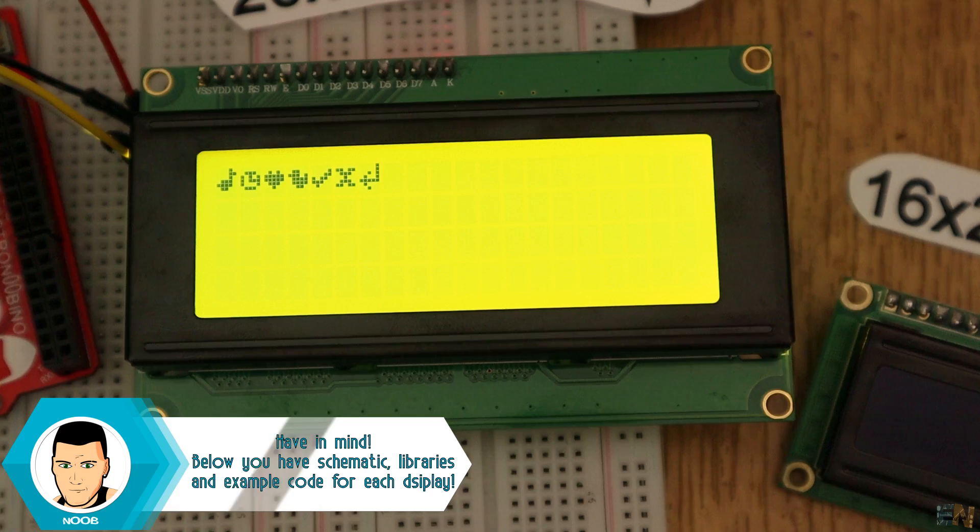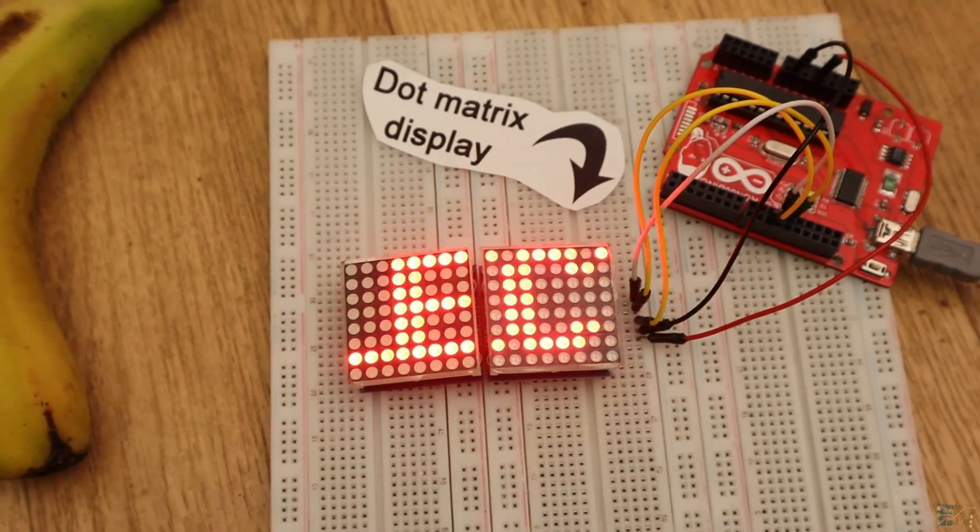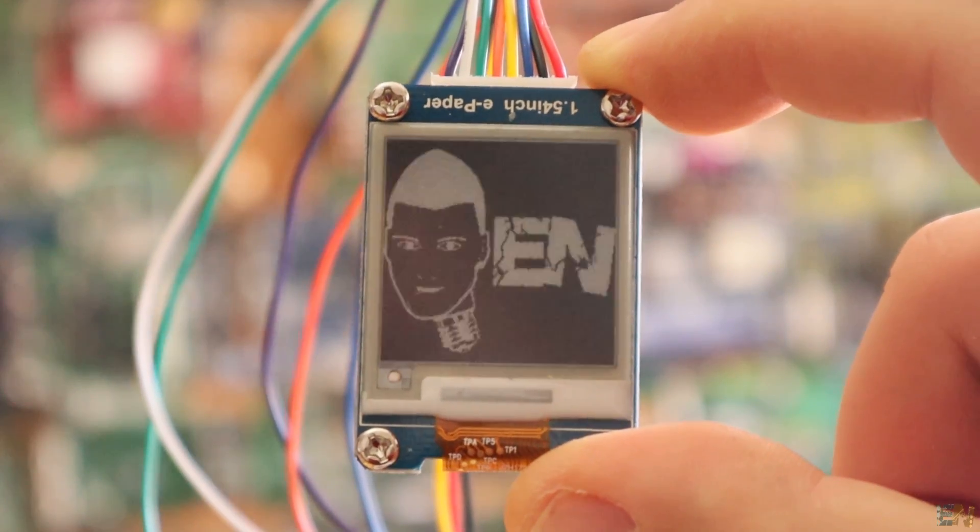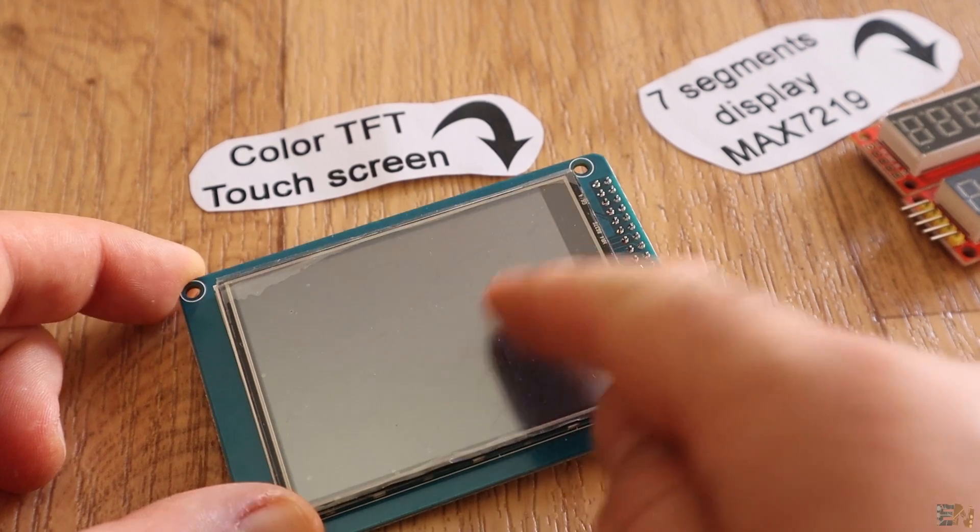We have displays for text, for numbers, dot matrices and e-papers. Some of these also have a touch screen, so you could also control stuff as well.